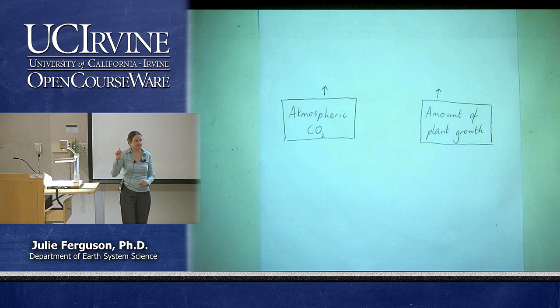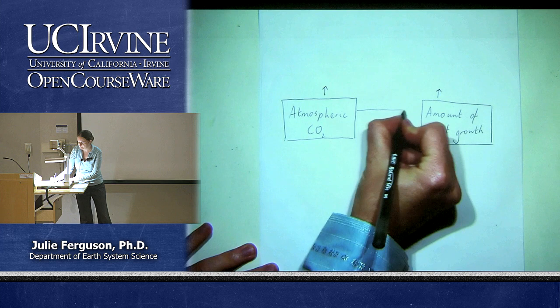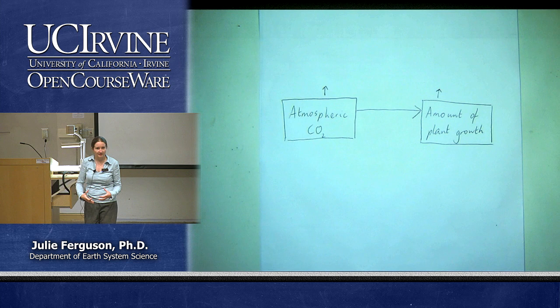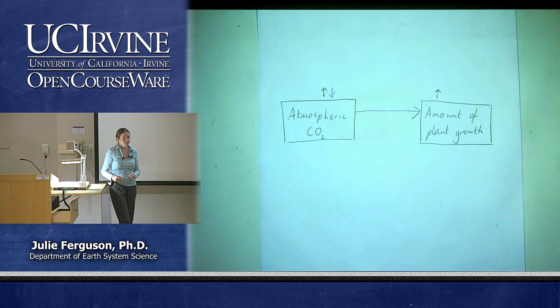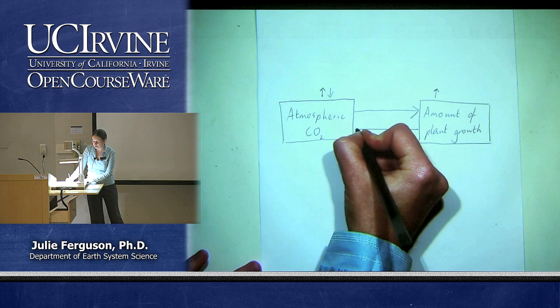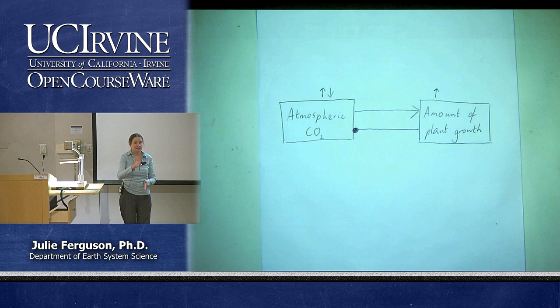So what kind of arrow do we draw between CO2 and plant growth? A normal arrow — an increase leads to an increase. But in the second part of this process, if we have more plant growth and plants are absorbing CO2, what happens to atmospheric CO2? It goes down. An increase leading to a decrease means we draw an arrow with a circle on the end. This gives us a closed loop — a negative feedback process. An initial increase, following the loop, leads to a decrease.